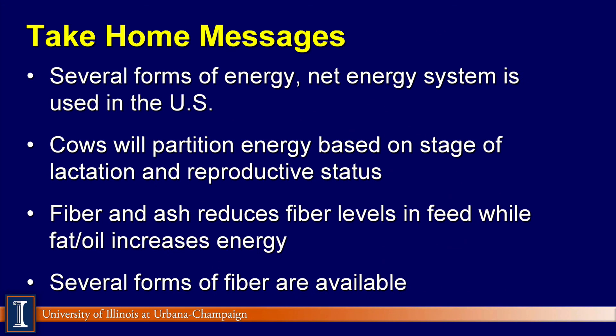Let's summarize this module with a few take-home messages. First, understand there are several forms of energy: the net energy system, the TDN system used in the U.S. and around the world, and in Europe, metabolizable energy. Second, cows will partition energy based on various stages of lactation and reproductive status. Third, as fiber and ash go up, that reduces the level of energy in a diet — meanwhile, a product high in fats and oils will have more energy and is worth more commercially. Finally, there are several sources of fiber in the diet with varying amounts of availability. Thanks, have a great day.